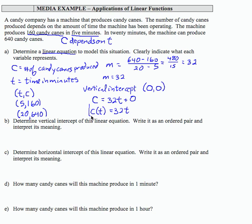There is my linear equation that models this situation. Determine the vertical intercept. Well, we already did that. That is 0, 0. The vertical intercept means that at time equals 0, no canes have been produced.